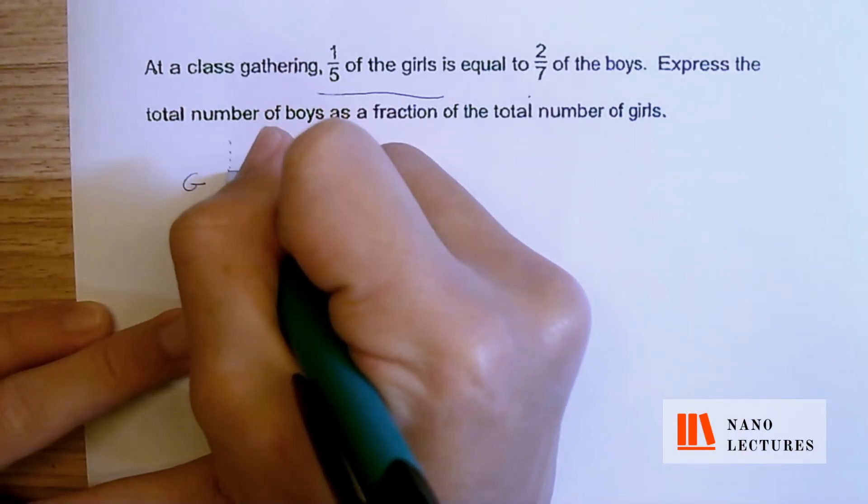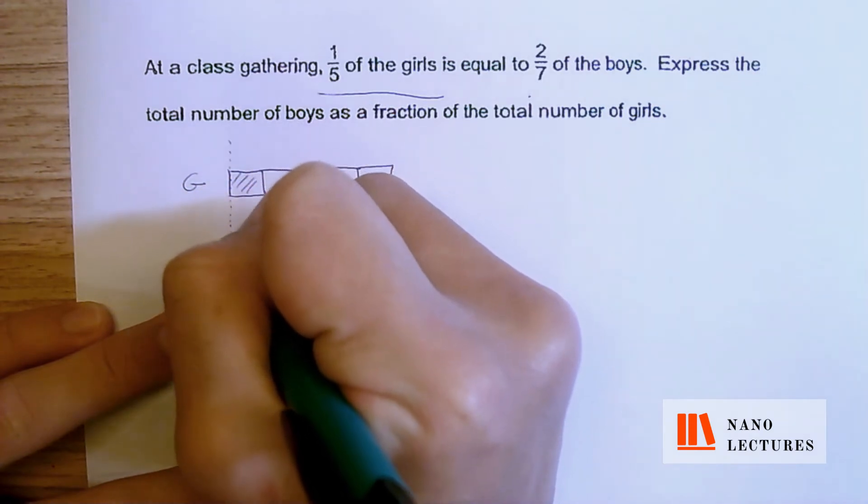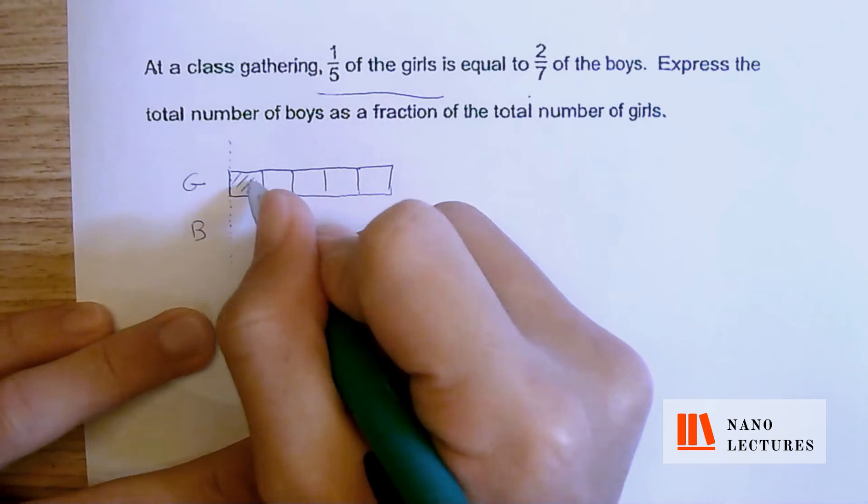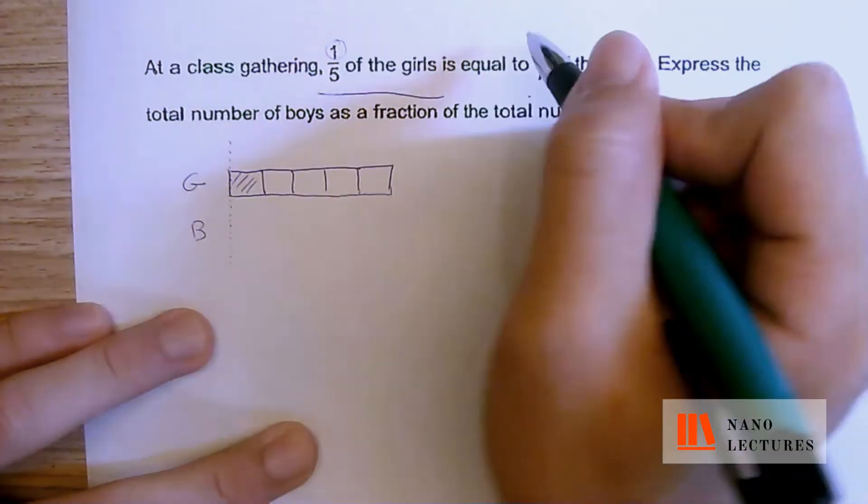Then I'm going to draw the boys part. So remember, if you're drawing another model below, remember to draw the starting line. So this is the B, and one-fifth, one part is equal to two parts.